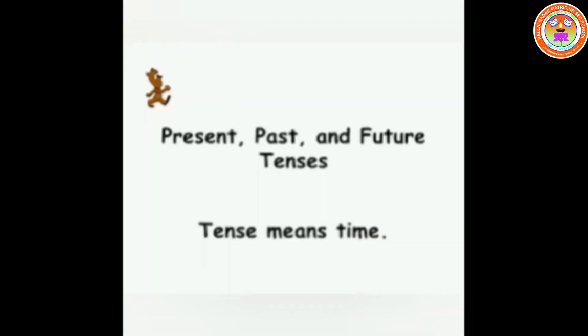Before that, we have to know about the tense. Tense means time. Tenses are the form taken by a verb to show the time of an action or the state of an event. There are three tenses: the present tense, the past tense, and the future tense.